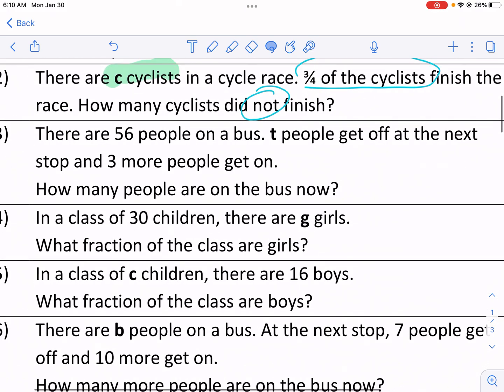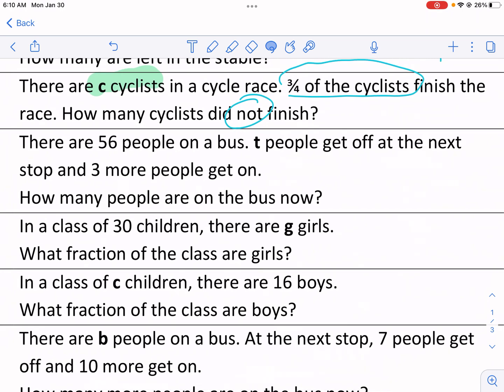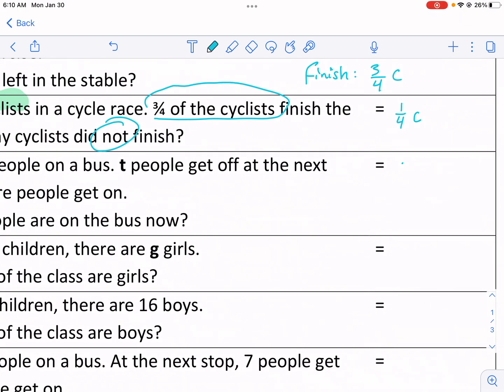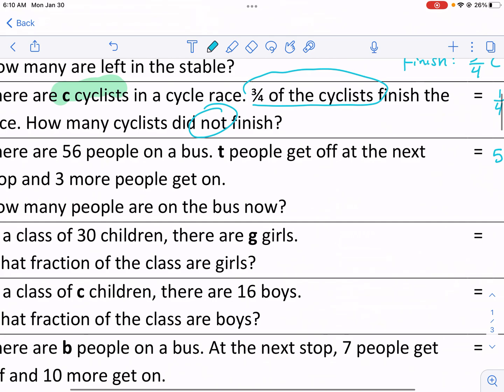Bus example. 56 people on a bus. T people get off at the next stop. So I'm going to start there. I'm not going to write anything else. I just want to start with that. So we have 56 to start with. That's our first number. And then T people get off. So I'm going to subtract T. Because they're getting off the bus.